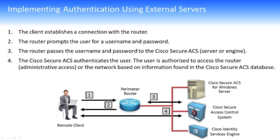So what we want to do is centralize the AAA processes. Here's an example of how this would work. In this particular case, we're looking at authentication. We have a remote client out here, and in the first step this remote client hits traffic against our perimeter router. The perimeter router says, hold on — I need to get your username and password information. That information is presented to the user, and they complete their username and password, which is then sent back to the perimeter router.